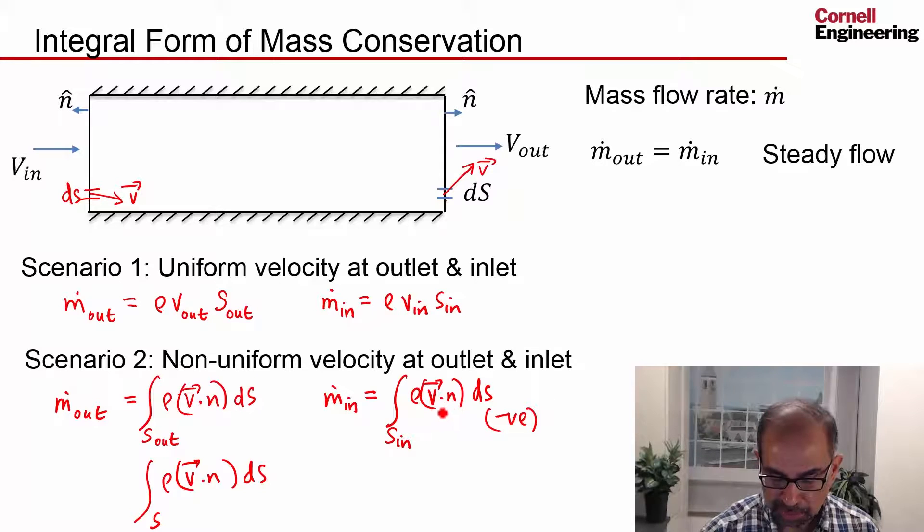So when I do the integration over here, I'll get that. When I do the integration over there, the velocity is zero, so I'll get zero. When I do the integration over here, I'll get that. And when I do the integration over here, I will get zero. So that's going to give me the net mass flow out, and that has to be zero.